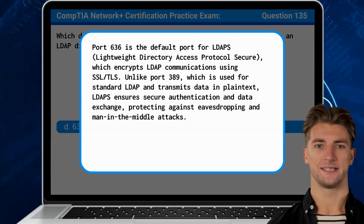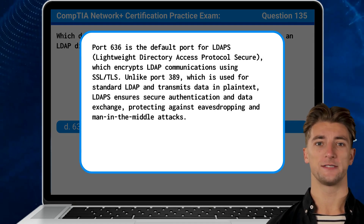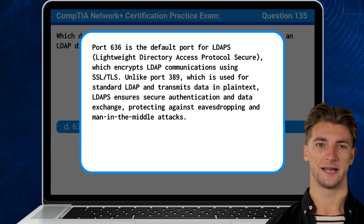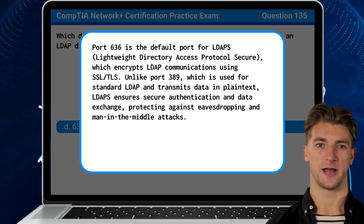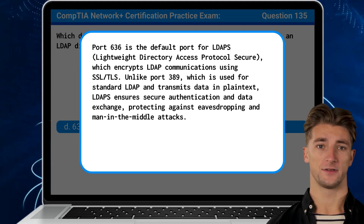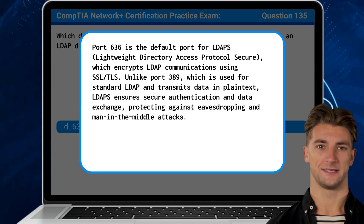Port 636 is the default port for LDAP-S, or Lightweight Directory Access Protocol Secure, which encrypts LDAP communications using SSL/TLS. Unlike port 389, which is used for standard LDAP and transmits data in plain text, LDAP-S ensures secure authentication and data exchange, protecting against eavesdropping and man-in-the-middle attacks.